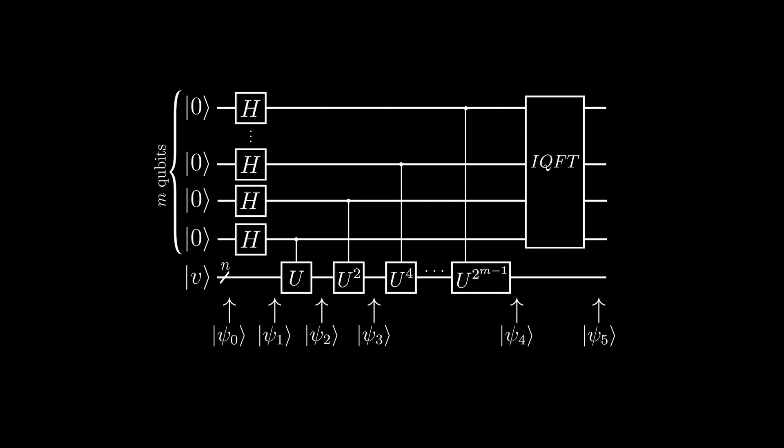Looking at the circuit, you can see that the gate U, which we are trying to find the eigenvalue of, is to the power of some numbers.